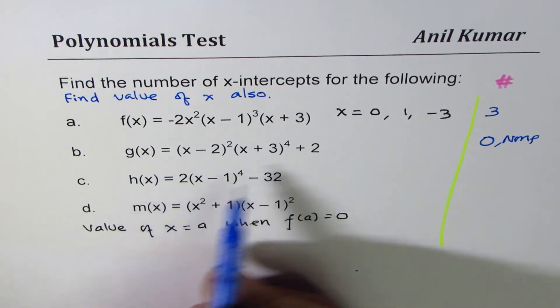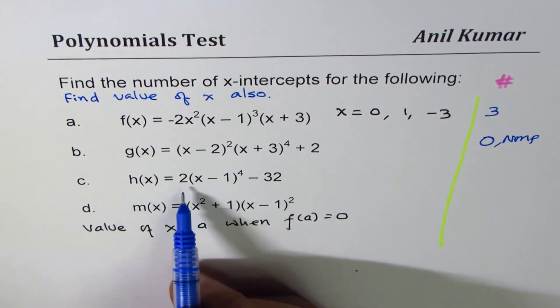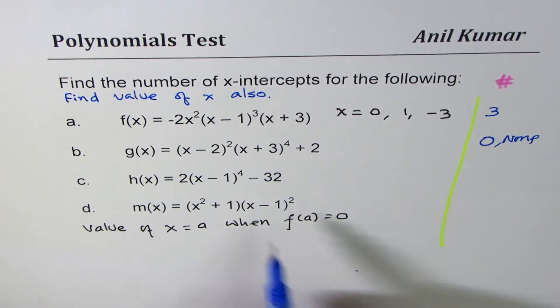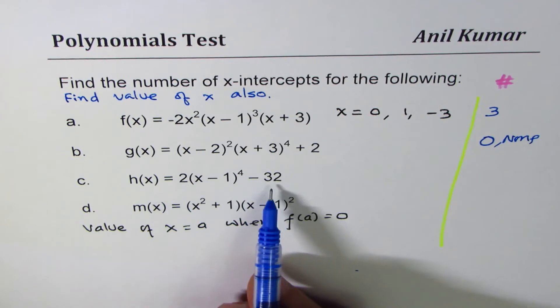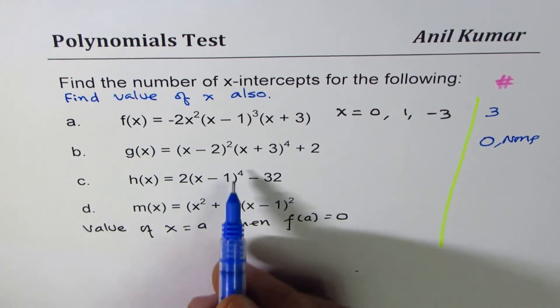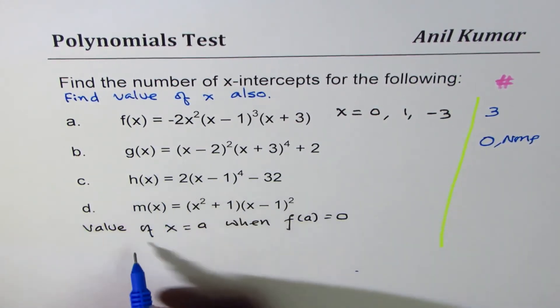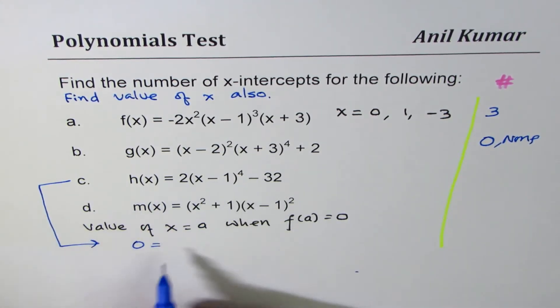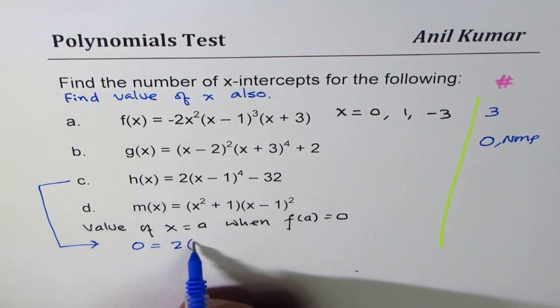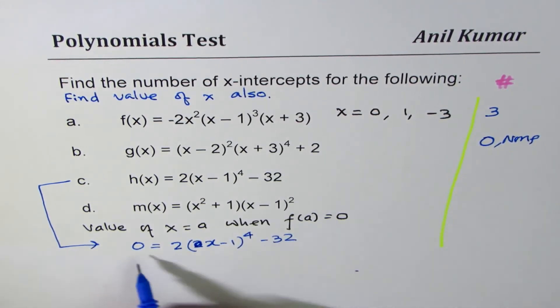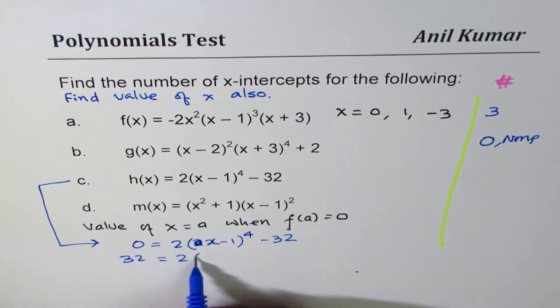Then we have 2(x - 1)⁴ - 32. Now I'll have to do some work to find out zeros for this function. However, we know that there are at least two zeros. Let's figure it out. So we want to make h of x as 0. We are trying to figure out the position of zeros from this equation, so we'll equate h of x as 0. We have 2 times (x - 1)⁴ minus 32. Bringing 32 to the left, we get 2(x - 1)⁴ = 32, and then dividing by 2.